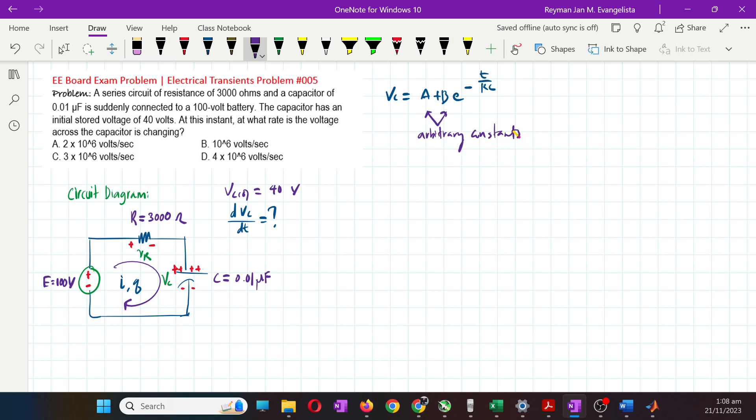This becomes second order because for RC, the voltage across the resistor is IR, and Vc is Q over C. You either have Q integrated or differentiated. When you derivative the equation, you end up with an equation with di/dt, and i is dq/dt.